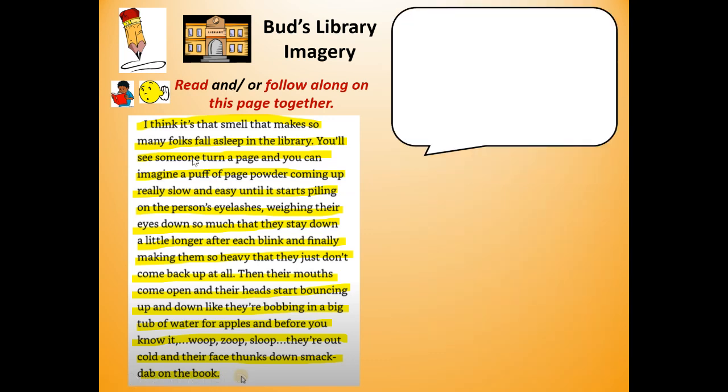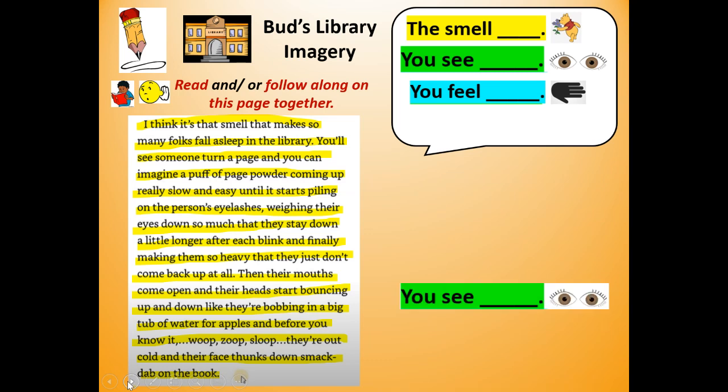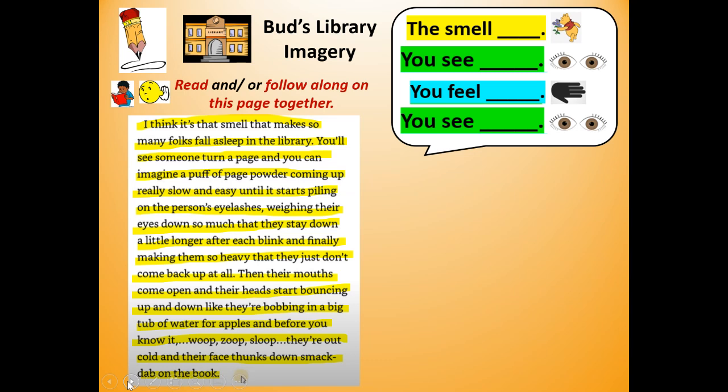So let's think. What was the smell? How did he describe the smell of the library? What did you see in the library? How did he describe what you see? And what do you feel when you're in the library? I want you to pick one of those and write it down. Push pause. Write 'the smell is like' or 'you see' or 'you feel,' push pause, write one of those sentence frames and finish it. How did Bud describe the smell of the library, what you see, or what you feel?